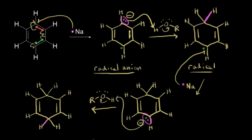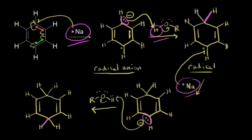A simple way of thinking about the Birch reduction mechanism is to break it into four steps: In step one, sodium donates an electron — think 'electron.' In step two, the anion picks up a proton from the alcohol — think 'proton.' In step three, sodium donates another electron — think 'electron.' In step four, the anion picks up another proton — think 'proton.' So the pattern is: electron, proton, electron, proton.